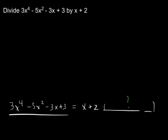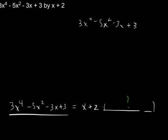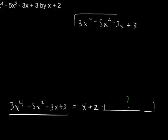So let's go ahead and start dividing. 3x to the fourth minus 5x squared minus 3x plus 3. Go ahead and move this out of the way. Divided by x plus 2.